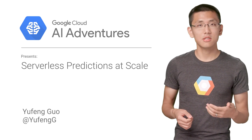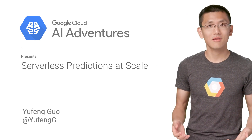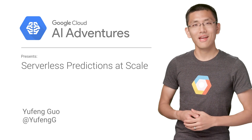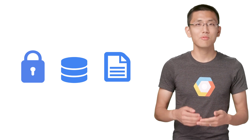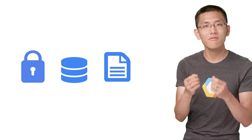Once we are happy with our trained machine learning model, how can we serve up predictions at scale? Find out on this episode of Cloud AI Adventures. Google's Cloud Machine Learning Engine enables you to create a prediction service for your TensorFlow model without any ops work, getting you from a trained model to a deployed auto-scaling prediction service in a matter of minutes.